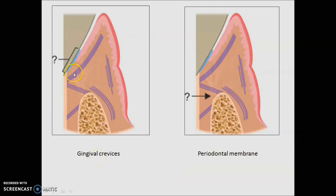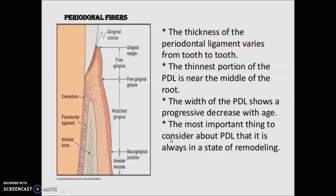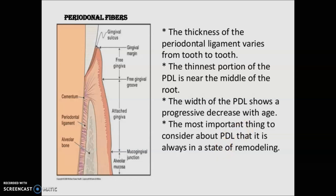Now a few questions related to PDL. The gingival crevice, PDL area, gingival sulcus, gingival margin, free gingival groove — up to the free gingival groove is your free gingiva. From the free gingival groove to the mucogingival junction is attached gingiva, and after that is alveolar mucosa. Adjacent to the alveolar bone we have PDL and its fibers, and then cementum. Remember: the thickness of the PDL varies from tooth to tooth; the thinnest portion is in the middle of the root; the width decreases with age; and the PDL is always in a state of remodeling — changing itself in hyperfunction or hypofunction.